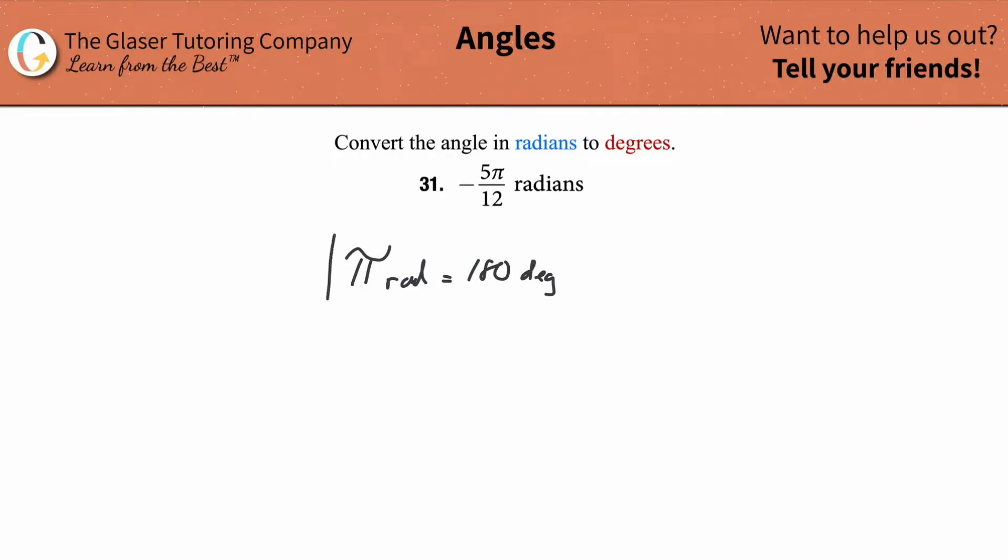Once I have a known relationship between the two, that's all I really need in order to do my conversion. I now start and I write down the given value here of negative 5 pi over 12 radians. Now, this unit I'm just going to put up here in the numerator. It's equivalent if it's next to or in the numerator.